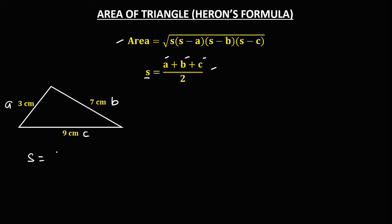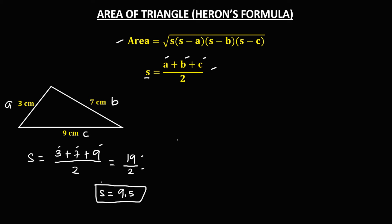So a is 3, plus b is 7, plus c is 9, then divided by 2. Simplifying: 3 plus 7 is 10, plus 9 is 19, then over 2. So 19 divided by 2 gives us s equals 9.5.